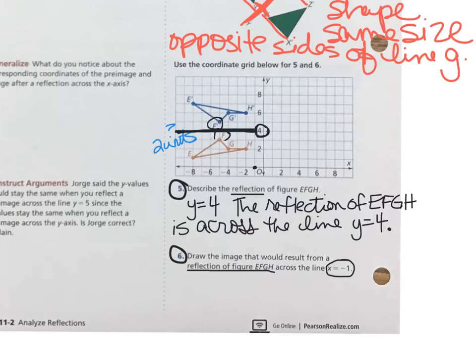And all the other points that would have the X coordinate negative 1 are all these points going up or down from that X axis. So if I want to reflect the figure EFGH across the line X equals negative 1, then what I need to do is I need to consider how far away each of these points is from that line.